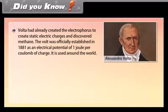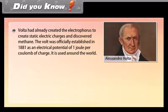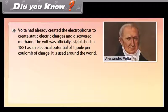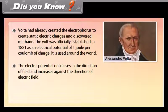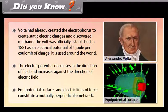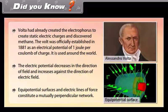Did you know? Volta had already created the electrophorus to generate static electric charges and also discovered methane. The volt was officially established in 1881 as an electrical potential of 1 joule per coulomb of charge, and is used around the world. The electric potential decreases in the direction of the field and increases against the direction of the electric field. Equipotential surfaces and electric lines of force constitute a mutually perpendicular network.